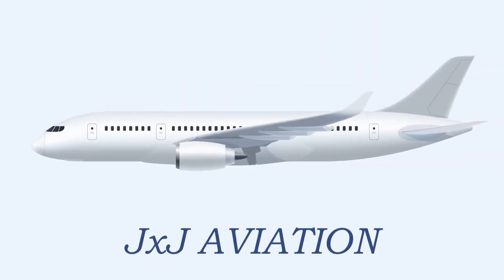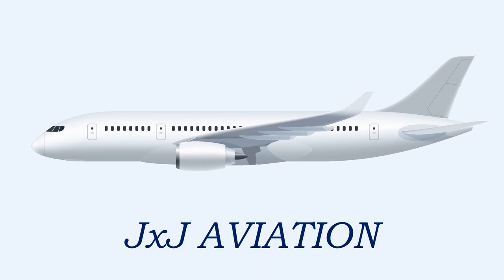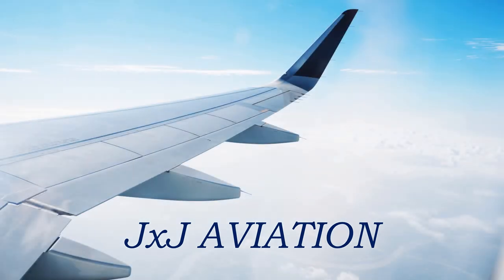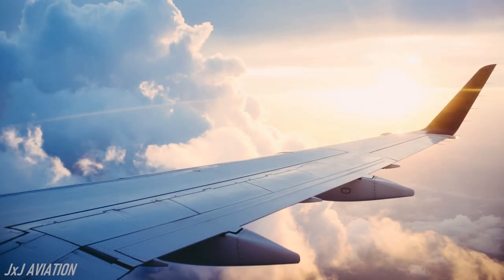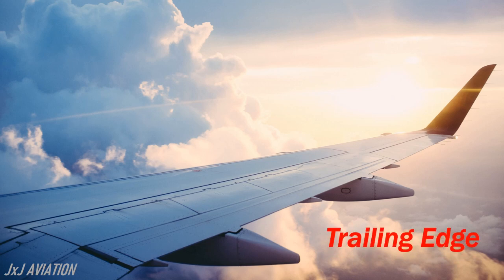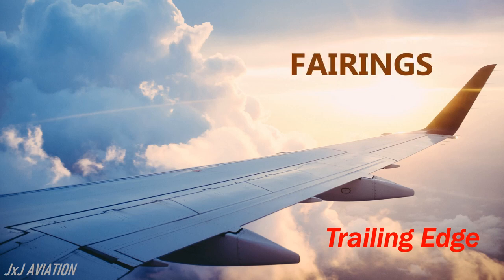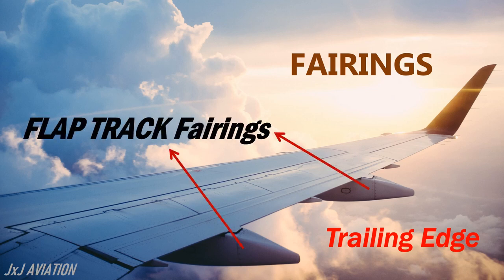Hello and welcome to GXJ Aviation. In this video we will be looking at what these components installed on the trailing edge of the wings are. On most commercial aircraft, these structures can be seen on the trailing edge of the wings. These are called fairings, and since these fairings cover the flap tracks, they are called flap track fairings.